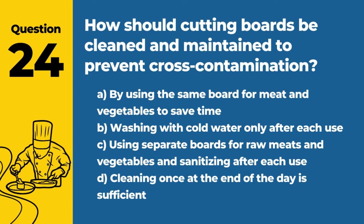Question 24. How should cutting boards be cleaned and maintained to prevent cross-contamination? Answer: C. Using separate boards for raw meats and vegetables and sanitizing after each use. This practice helps prevent the transfer of harmful bacteria from raw meats to foods that will not be cooked.